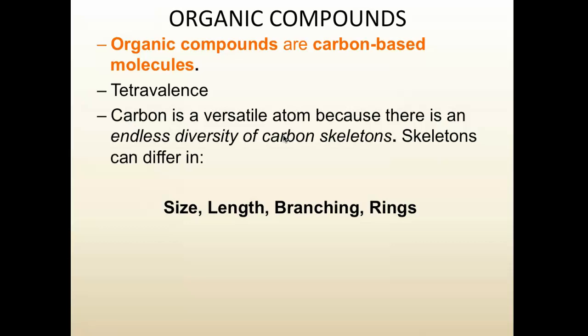Carbon is unique because it has a tetravalence — it can bond to four different atoms. It has four empty seats for electrons, so it wants to make four bonds. Because of this unique tetravalence, carbon can form different shapes of molecules. In biological systems, the shape of a molecule is critical for what it does and how your body reacts to it. Carbon skeletons can vary in size, branching, and whether they form rings.